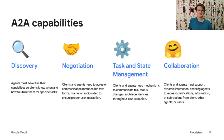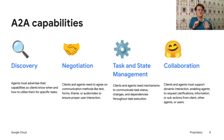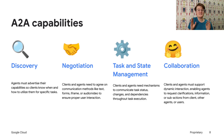A2A agents can dynamically discover each other, collaborate via standardized tasks, share multi-modal content, handle long-running processes, and do all of this with enterprise-grade security. Importantly, every agent is opaque, which means the implementation details never need to be exposed to follow the protocol. A2A is focused primarily on the bridge between agents.